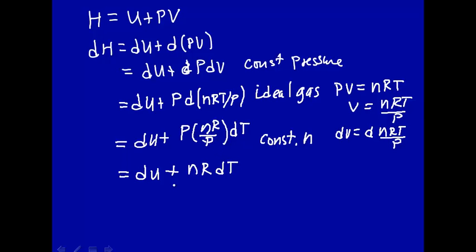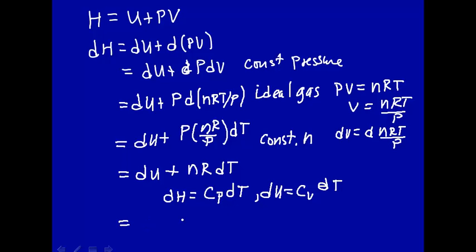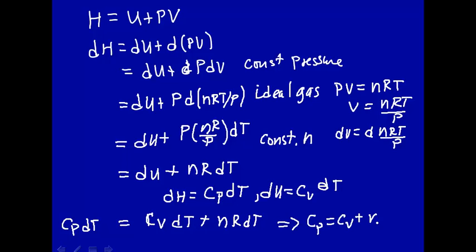Now, remember from a previous lecture that dH equals Cp·dT and that dU equals Cv·dT. Substituting those in: Cp·dT equals Cv·dT plus nR·dT. Dividing through by dT, we get Cp is equal to Cv plus nR.